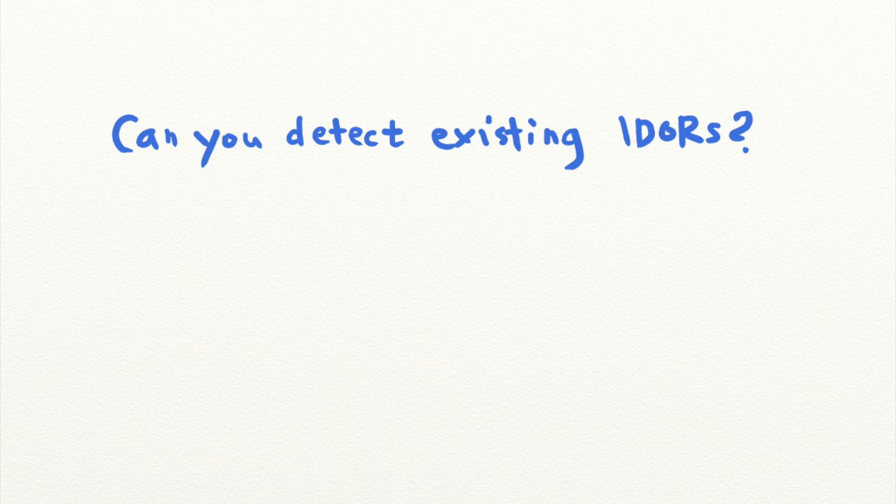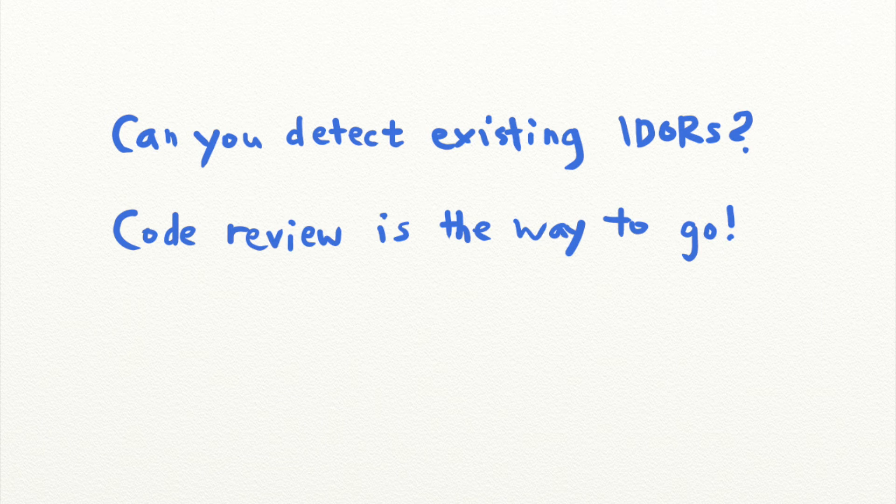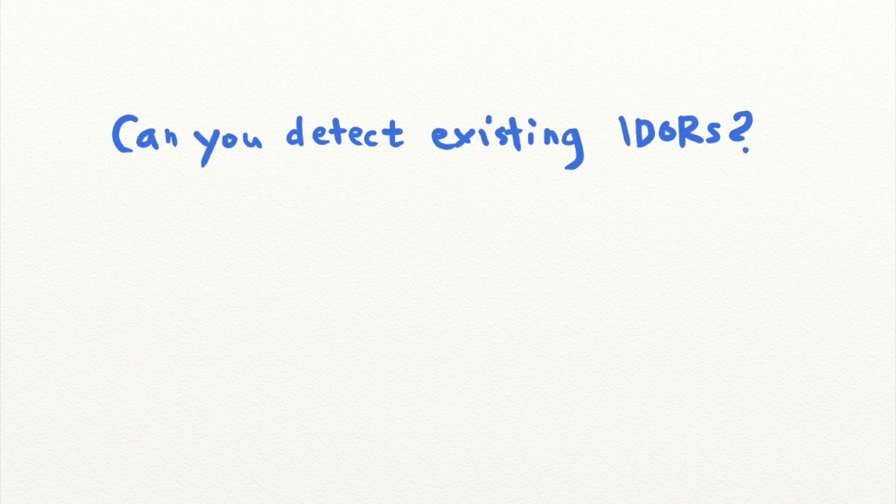So the best way to discover existing IDORs is through a source code review to see if all of the direct or indirect object references in your application are protected by proper access control.